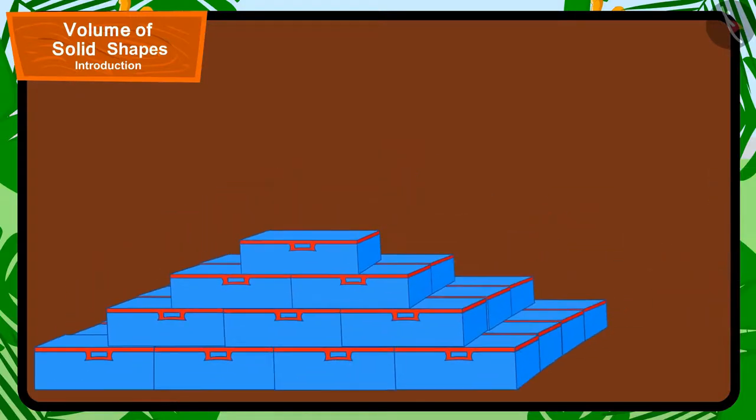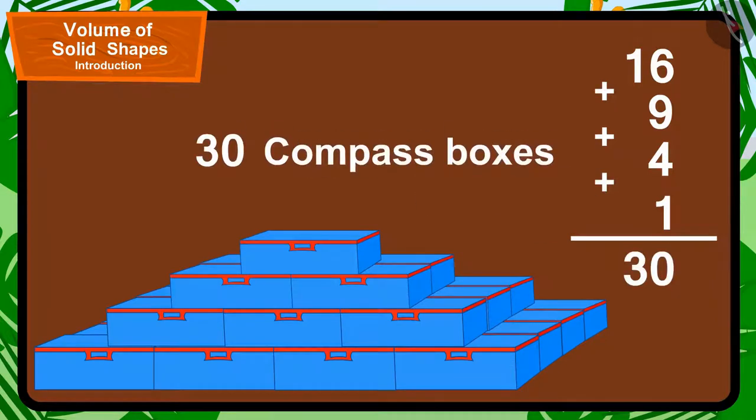So, in this shape, by adding 16 plus 9 plus 4 plus 1, we get 30 compass boxes.